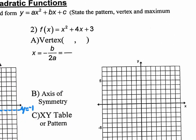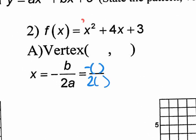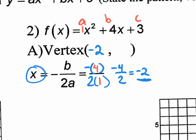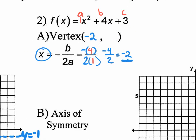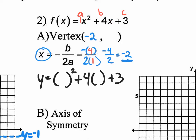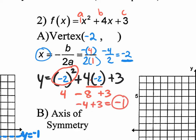Number two — let's find that vertex. I always do parentheses and identify: my a value is 1, my b value is 4, my c value is 3. Let's plug in the b value of 4 and the a value of 1. This becomes a negative 4 over 2, which means x equals negative 2. So my vertex x value is negative 2. To find the y value, I plug negative 2 back into the original. Negative 2 squared becomes positive 4. Then 4 times negative 2 is negative 8. Then 4 minus 8 is negative 4, and negative 4 plus 3 is negative 1. So the vertex is negative 2, negative 1.